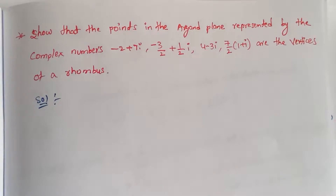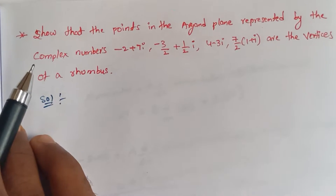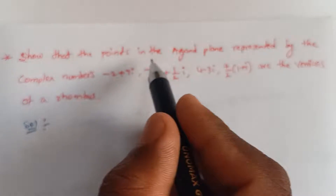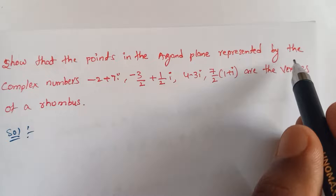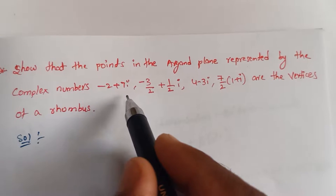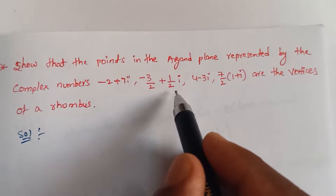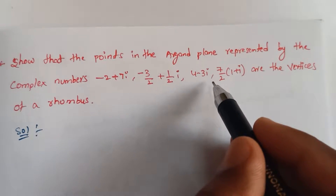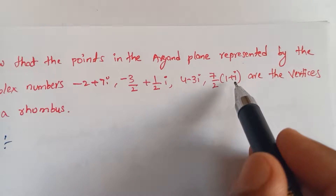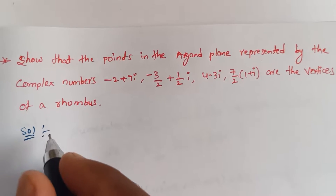Hello, welcome to Manashtadi channel. Here is the question: show that the points of the Argand plane represented by the complex numbers minus 2 plus 7i, minus 3 by 2 plus 1 by 2i, 4 minus 3i, and 7 by 2 into 1 plus i are the vertices of the rhombus.